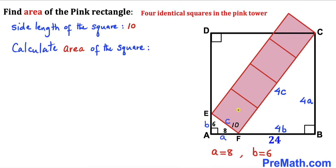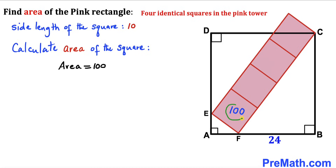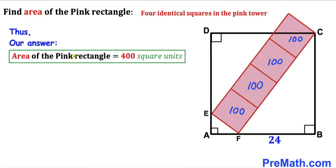Let's calculate the area of each square. The area of a square equals s squared, where s is the side length. Our side length is 10, so the area of each square is 10 squared, which equals 100 square units. Since all four squares are identical, each has an area of 100 square units. The total area of the pink rectangular tower is 100 + 100 + 100 + 100 = 400 square units.